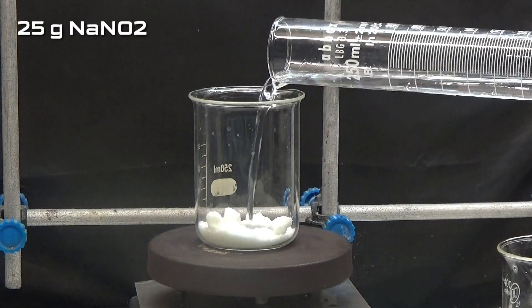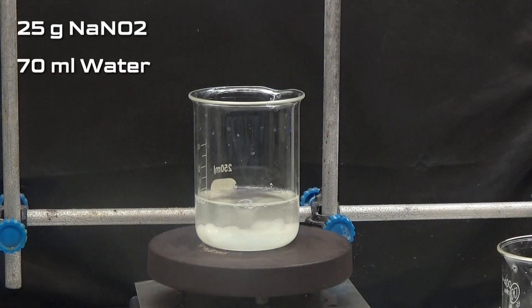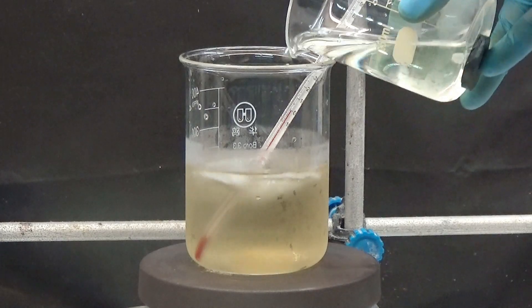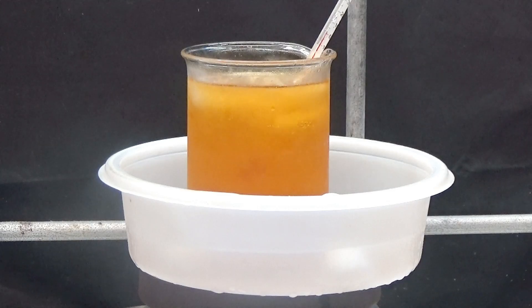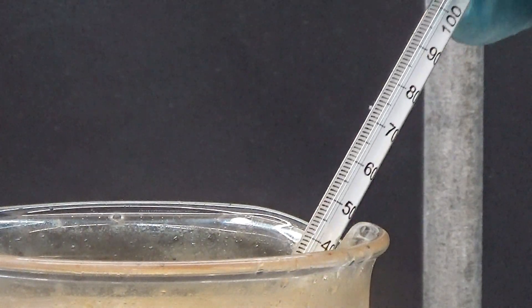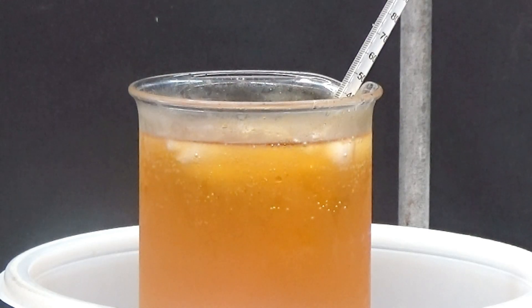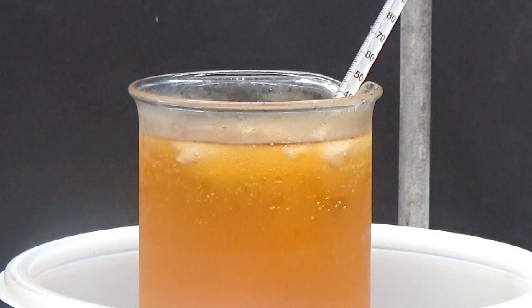In another beaker, prepare a solution of 25 grams of sodium nitrite in 70 milliliters of water and keep cold with an ice bath. When the nitrite solution is cool enough, add over the orthotoluidine solution, the temperature should be kept between 0 and 5 degrees. The diazonium salt is formed with gas formation and orange color change. Keep the diazonium salt solution under stirring for 15 minutes.